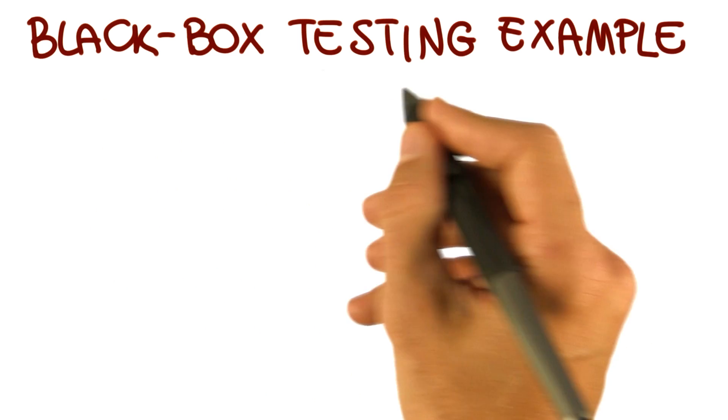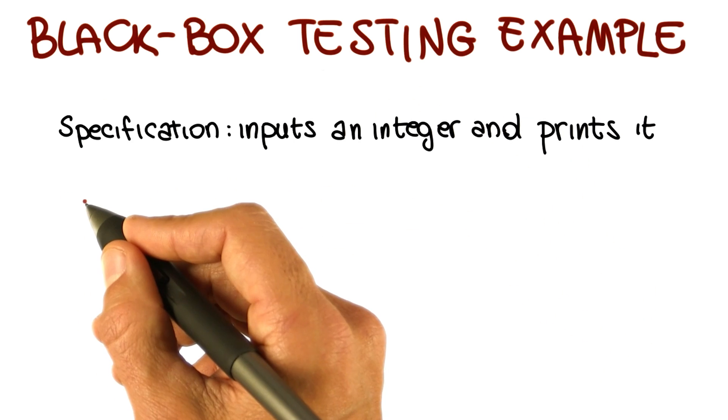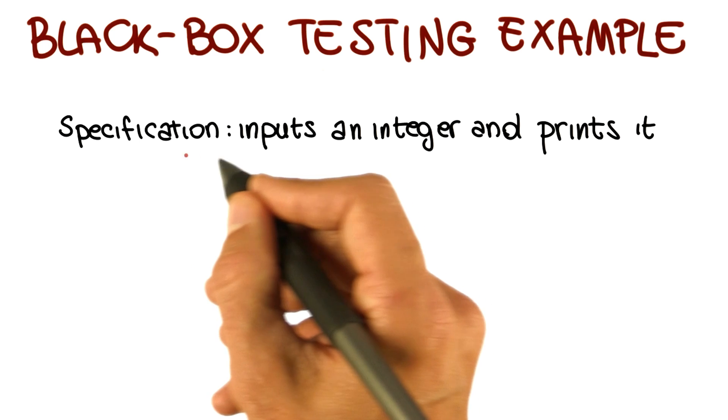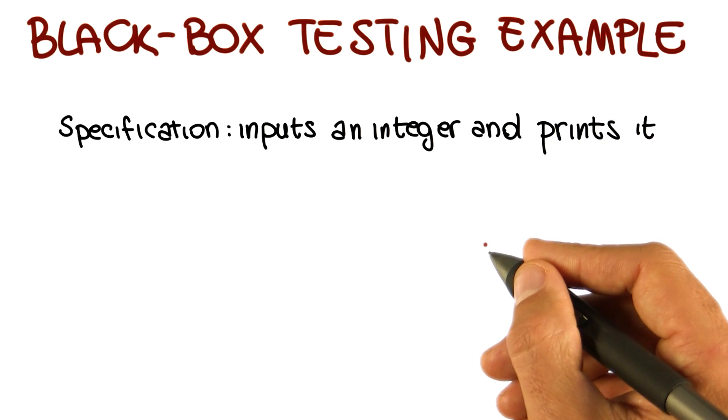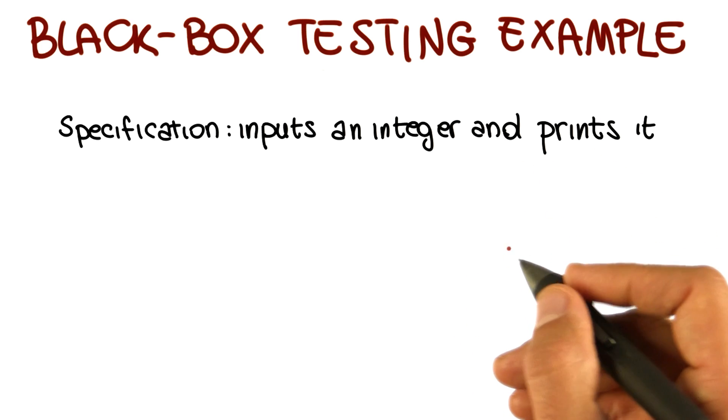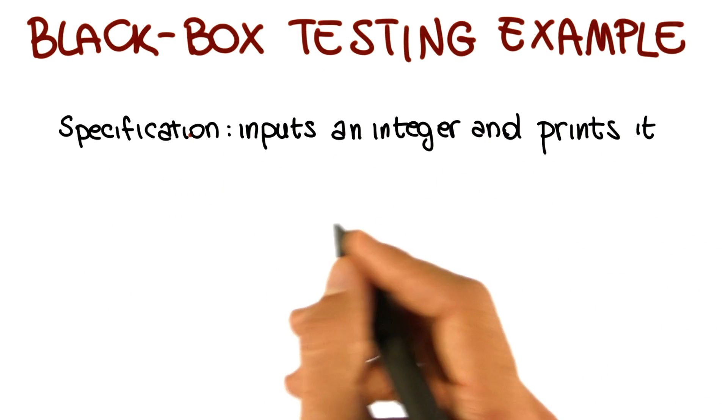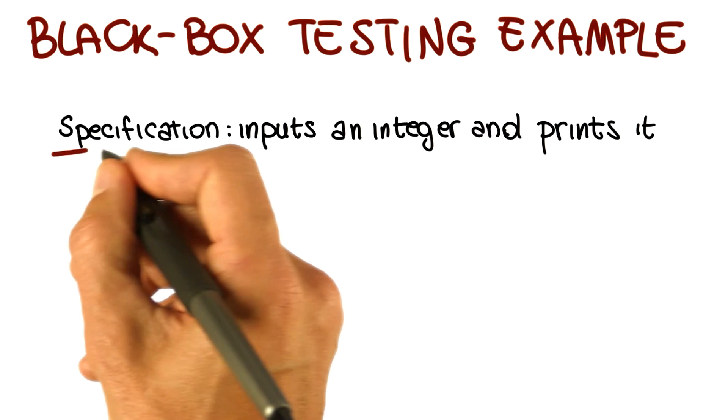So in this case, let's start with black box testing, so we're only working with the specification. Let's say that our specification says that this is a program that inputs an integer value and prints it. And the implementation, we don't know, because we're working at the black box level.